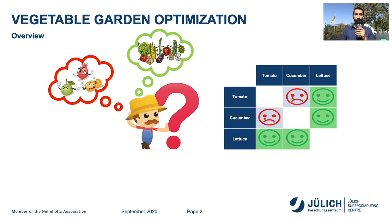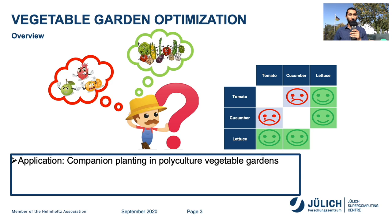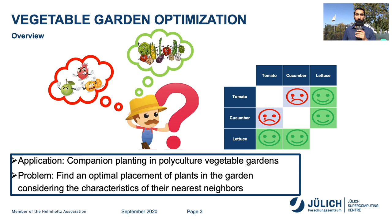For example, this matrix shows three species where tomato and cucumber do not get along. Hence, we would prefer that they are not planted next to each other. Thus, the real-world application we are looking at is companion planting in polyculture vegetable gardens, and the problem at hand is to find an optimal placement of plants in the garden considering the characteristics of the nearest neighbors.